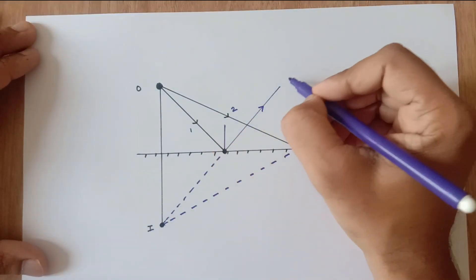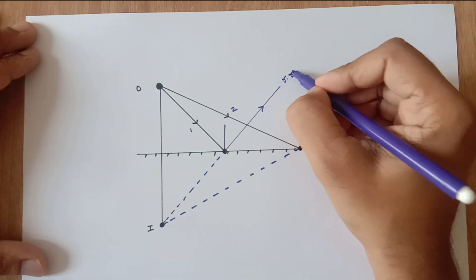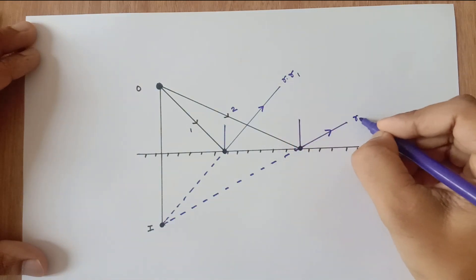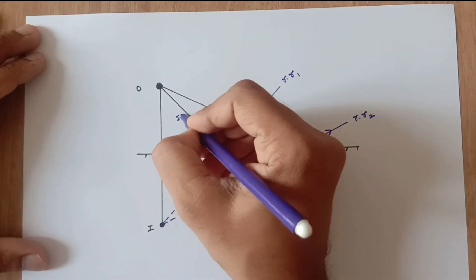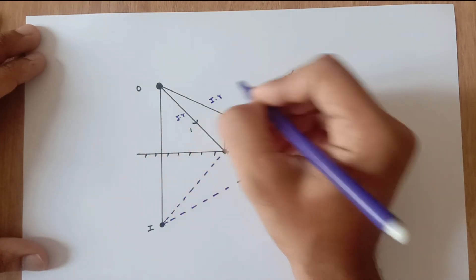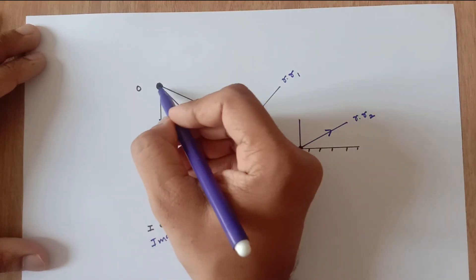Now since the reflected rays are diverging in nature, that means they are not meeting, so we need to extend them behind the mirror to get the image. And the image would be virtual and erect, and the image would be formed behind the mirror because virtual images in mirrors are formed behind the mirrors.